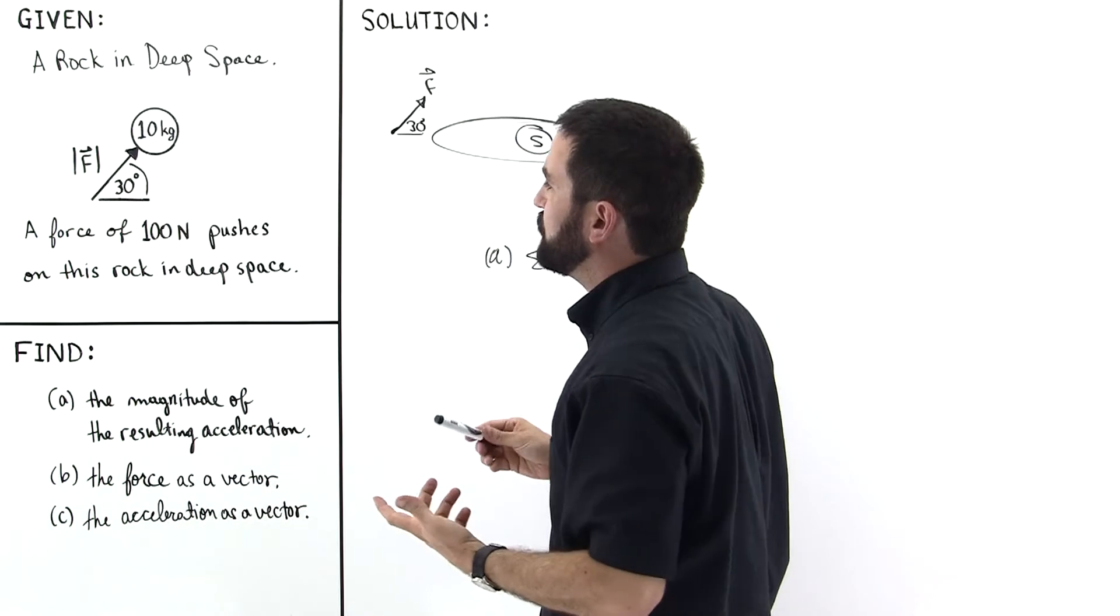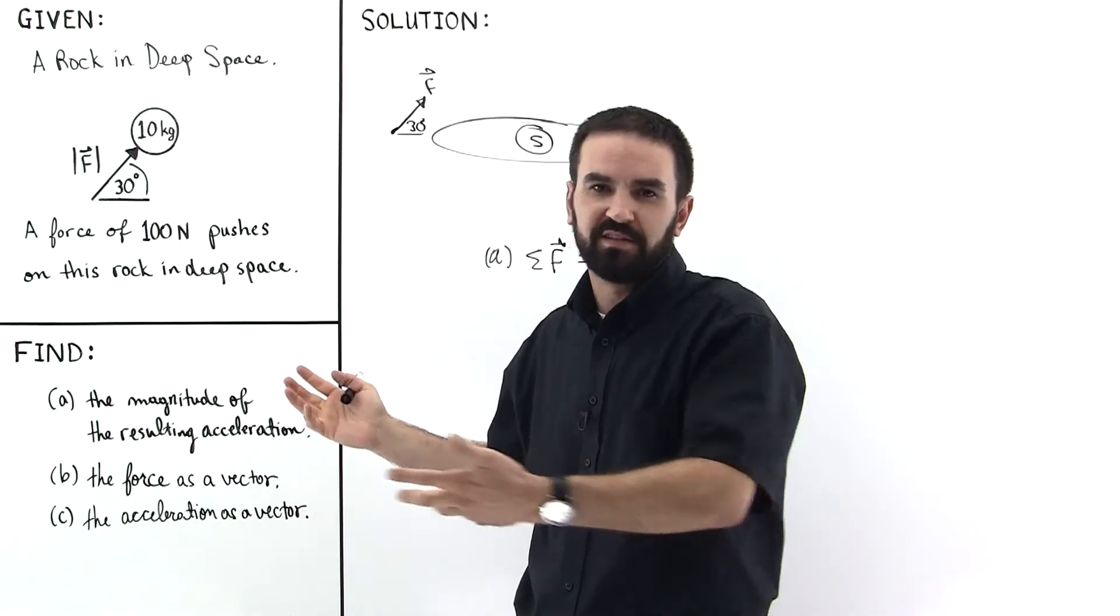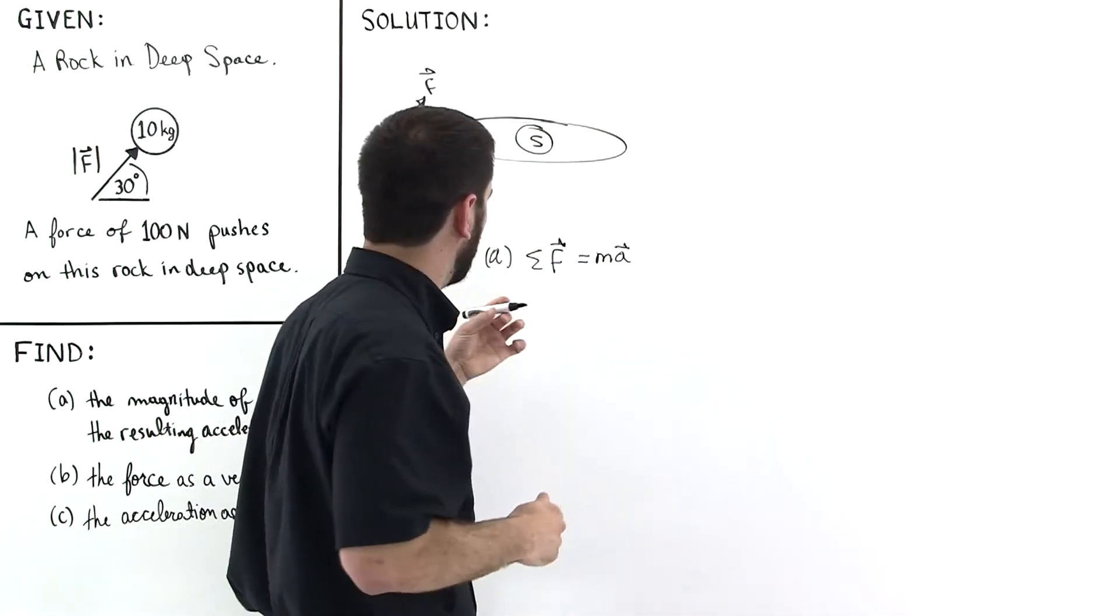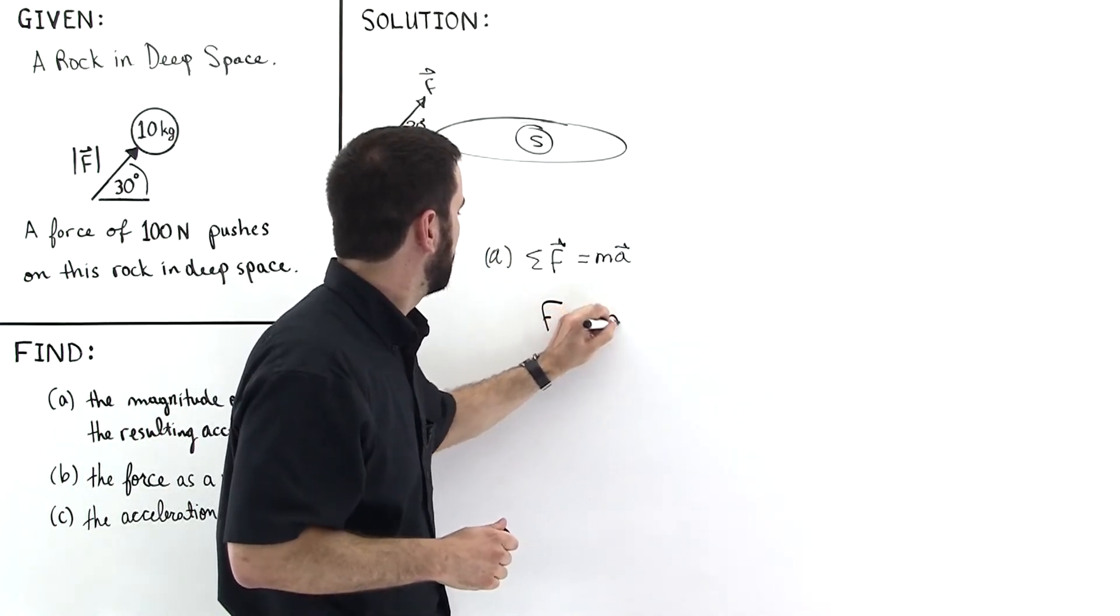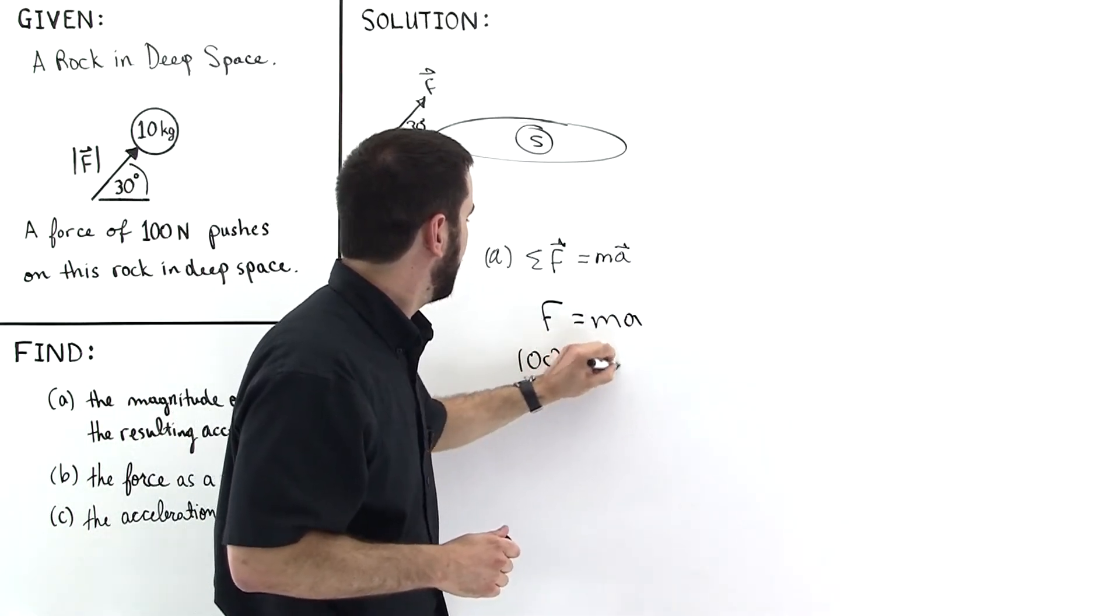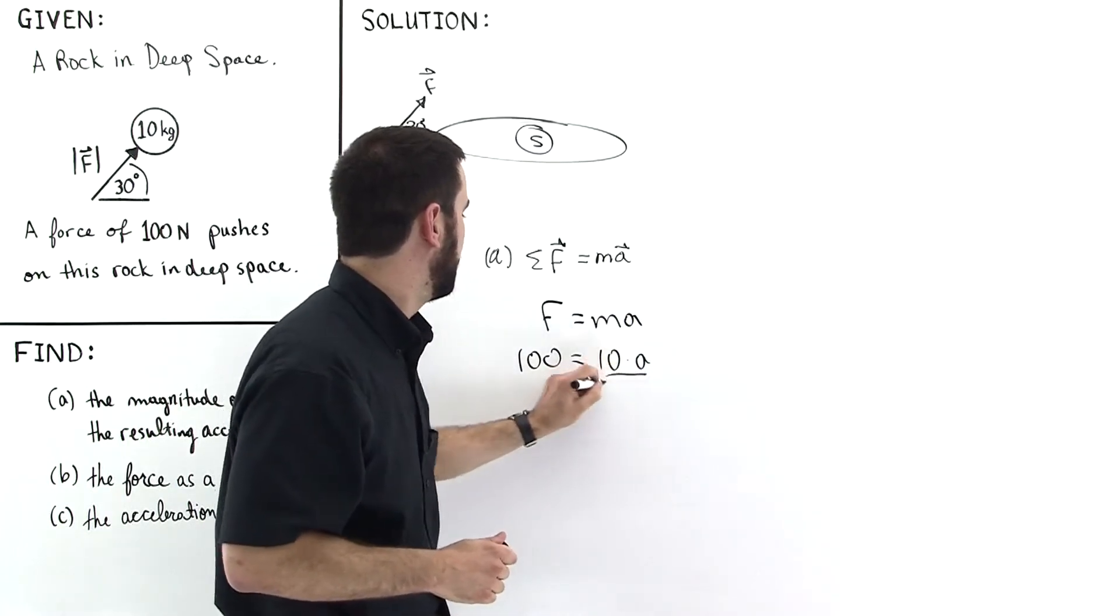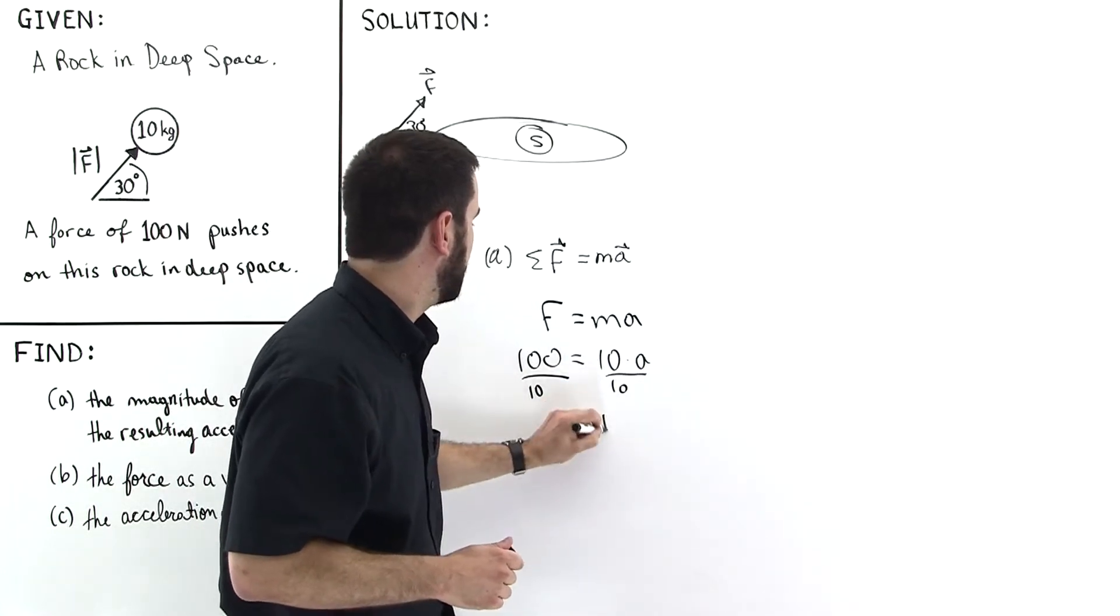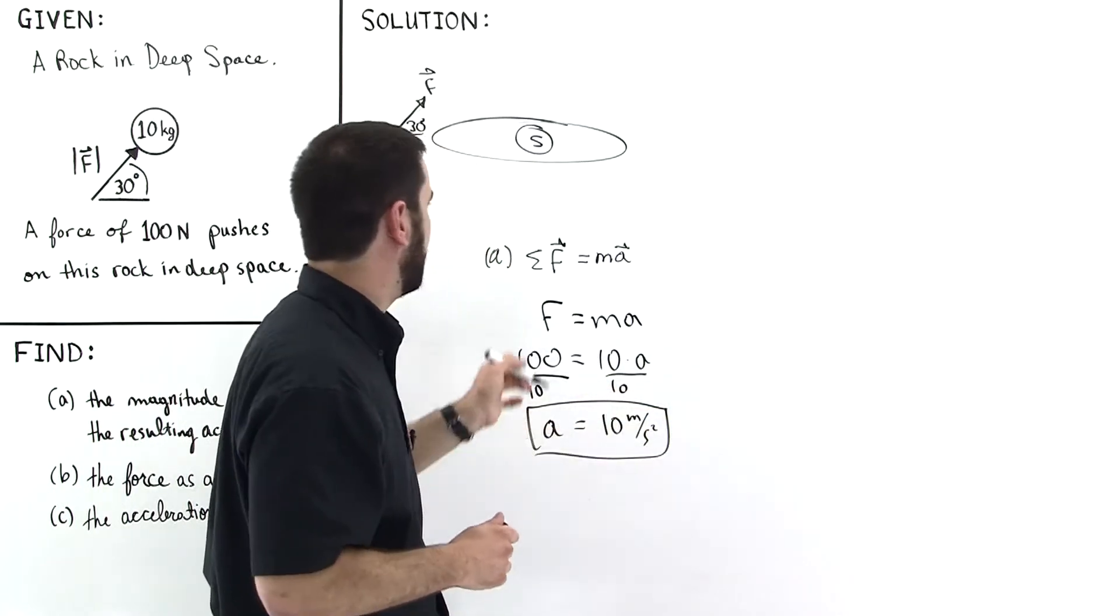So all we have to do is find the magnitude of the force, which we're given, it's 100 Newtons, and set it equal to 10 times acceleration because the mass is 10. So we can drop the vectors and say F equals MA, because we only have one force acting. This is 100, this is 10, multiplying times the magnitude of the acceleration, dividing by 10, acceleration is equal to 10 meters per second squared. That's the magnitude of the acceleration.